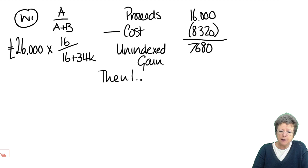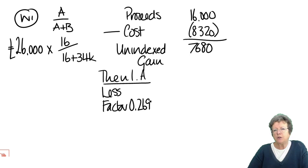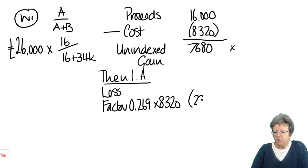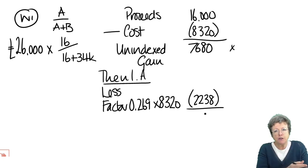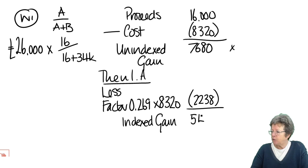We must then do indexation allowance, which is deducted. The factor from the question — make sure you don't go past December 2017. We're going to multiply that by the cost, not by any other figure. That gives us £2,238. Please put that in your calculator and make sure you understand what it is. It might be worth pausing when you've finished watching this bit, go back to the question and do it yourself to make sure it looks exactly the same, which gives us an indexed gain of £5,442.